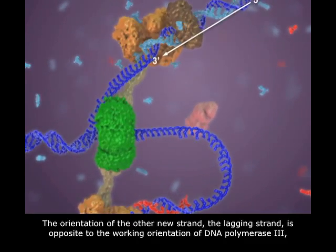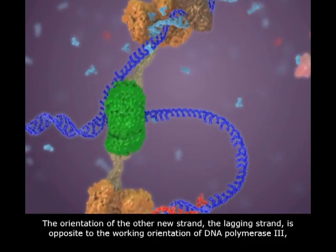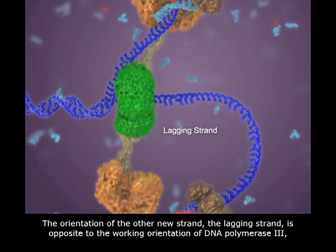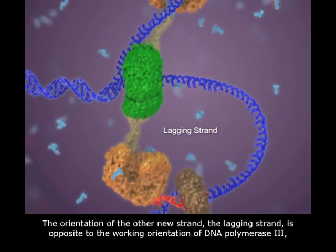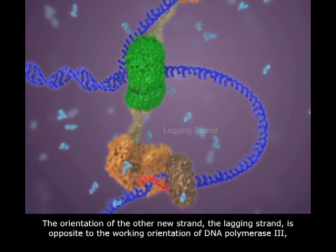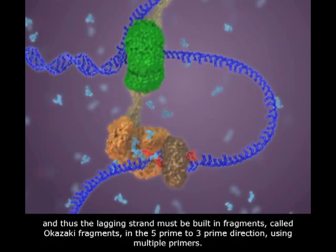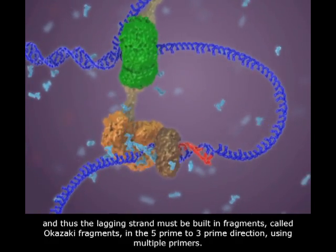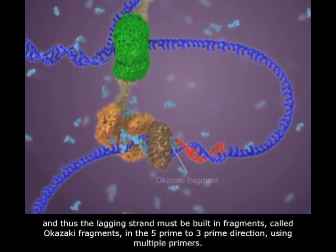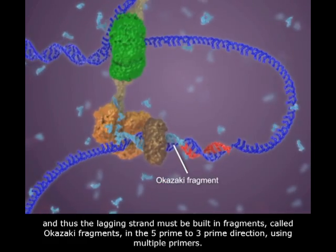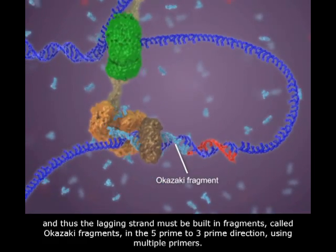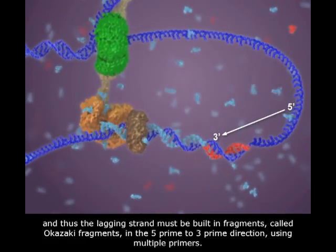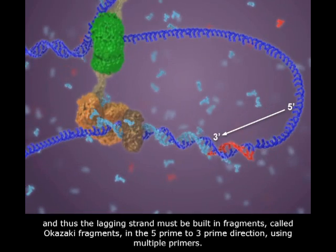The orientation of the other new strand, the lagging strand, is opposite to the working orientation of DNA polymerase III, and thus the lagging strand must be built in fragments, called Okazaki fragments, in the 5' to 3' direction, using multiple primers.